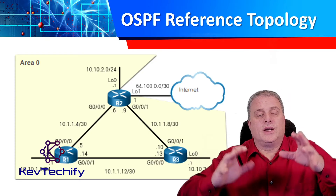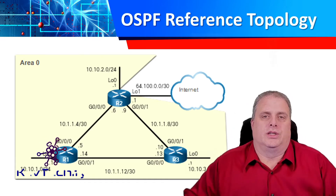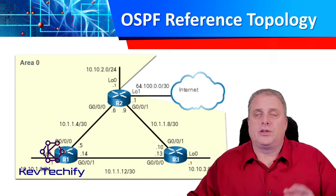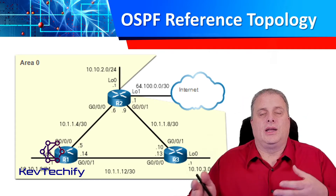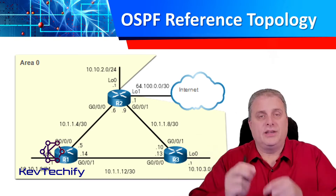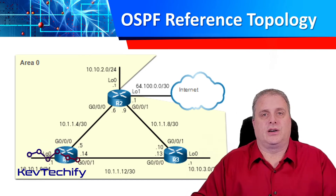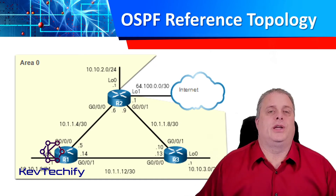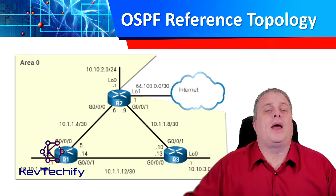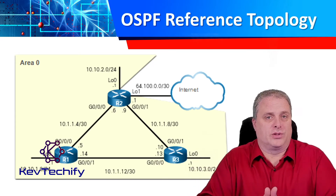This is the basic topology network we're going to be using to describe how OSPF works in this episode. We have three routers here. Those three routers are all interconnected by their gigabit interfaces. Each of those connections between the routers is an individual network with a slash 30 subnet on them, so there's only two addresses there. These are point-to-point connections. Each router has a loopback address that will simulate another network on the far side of those routers.